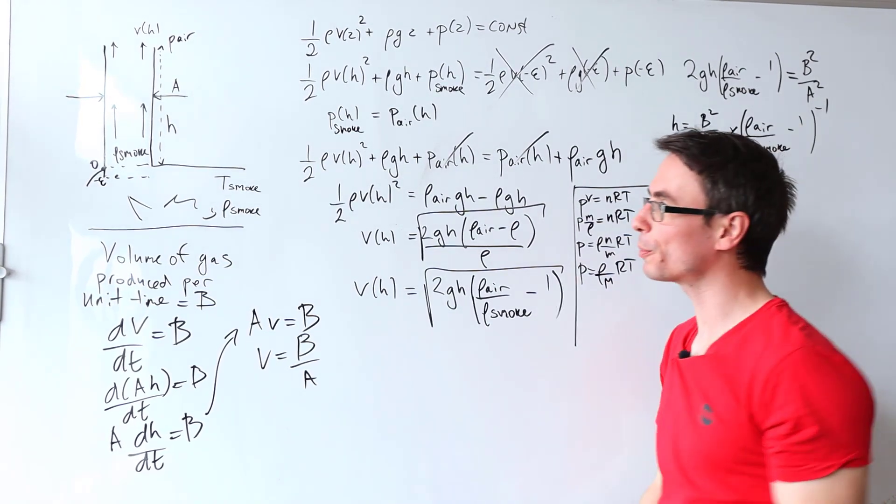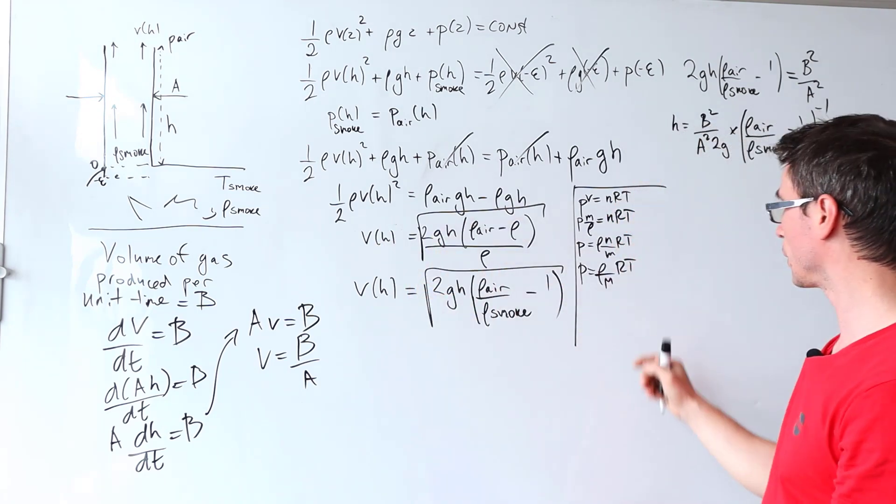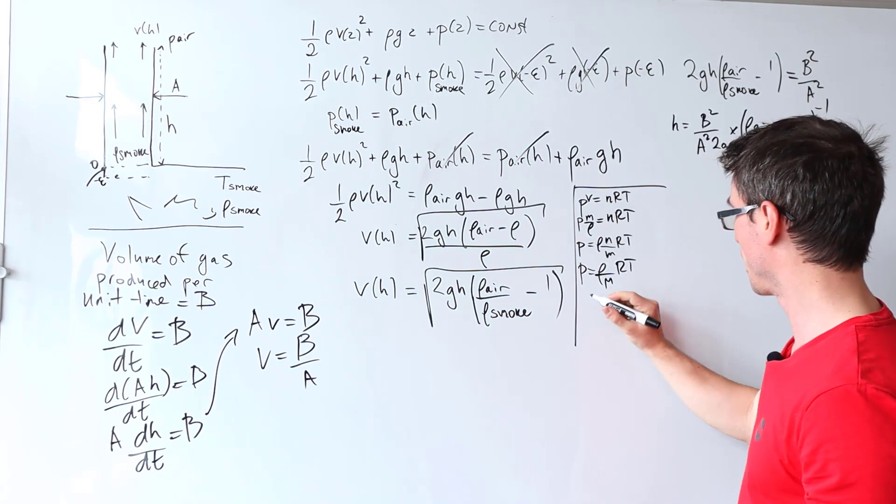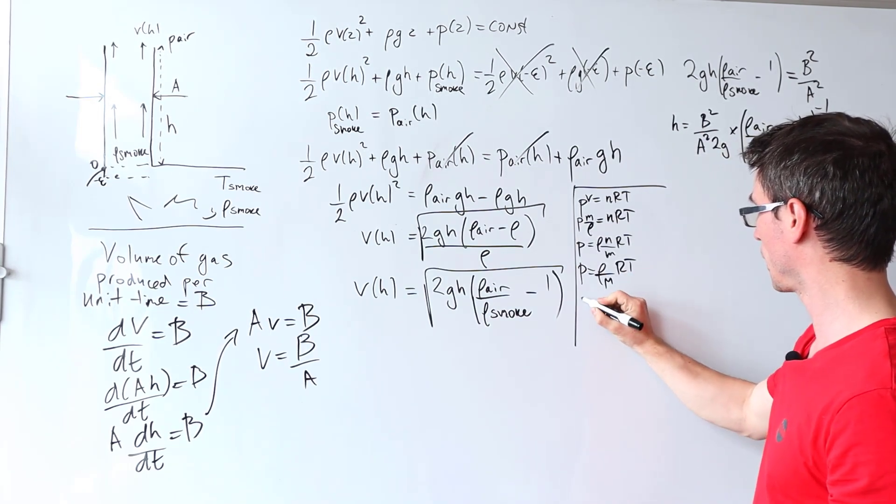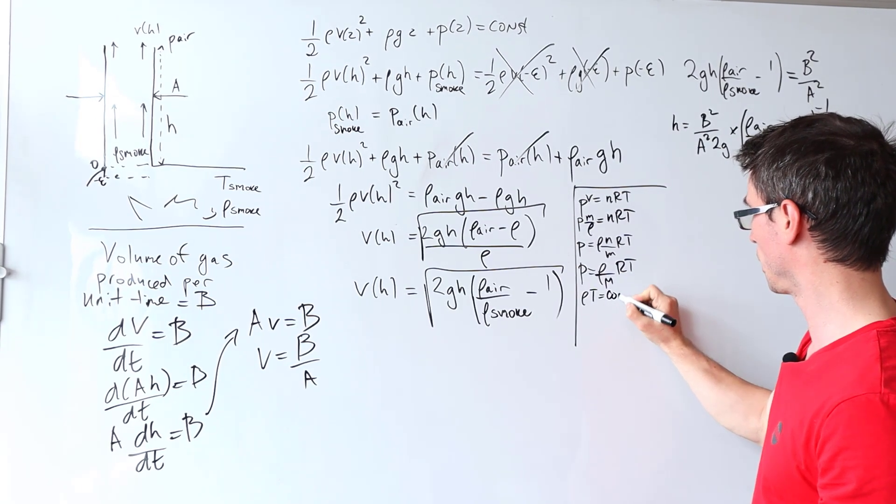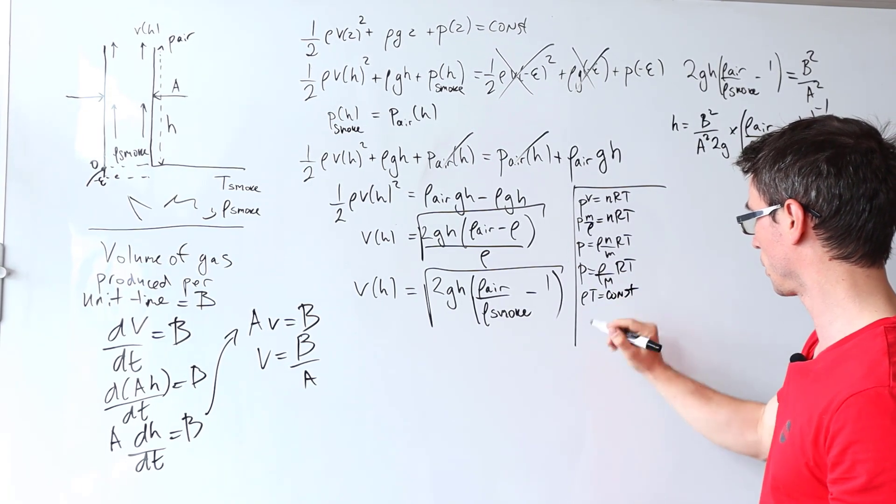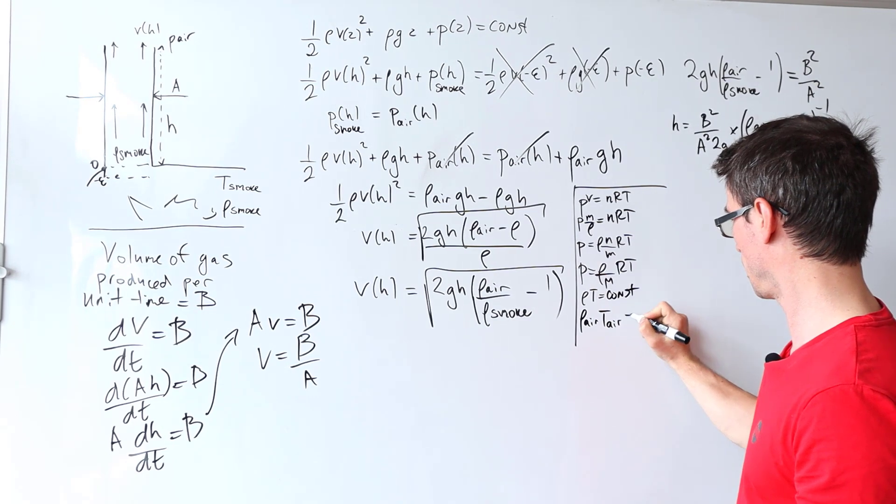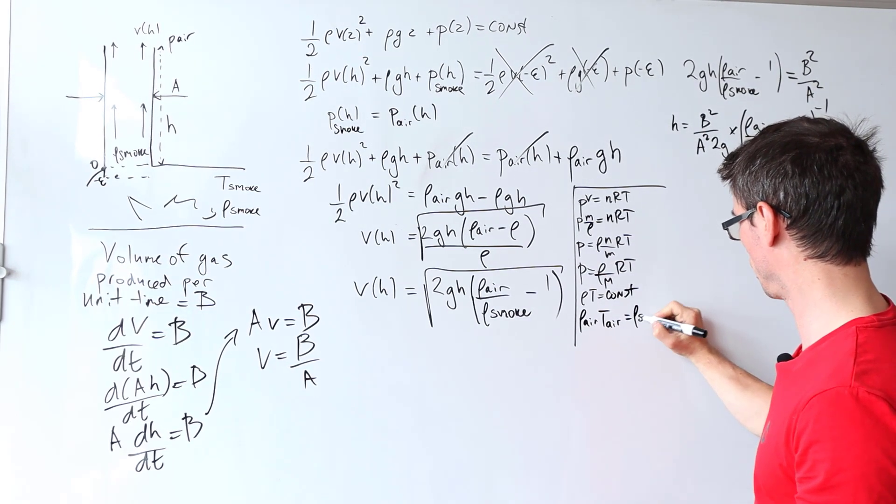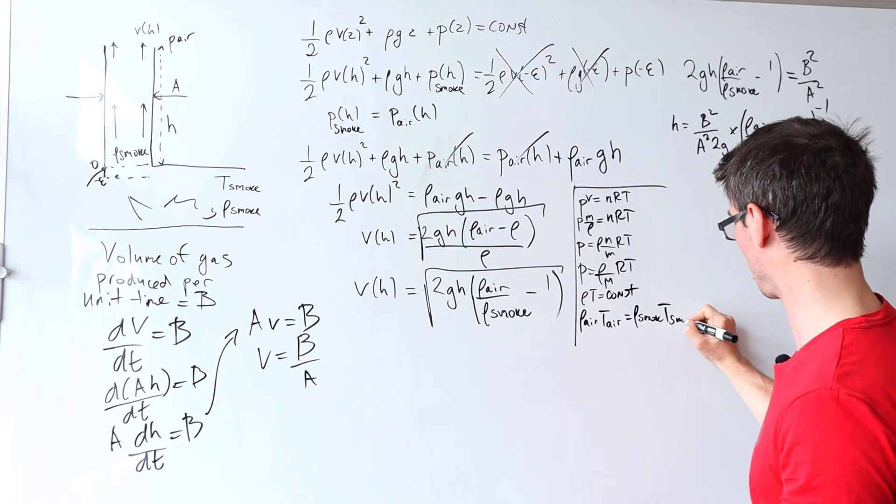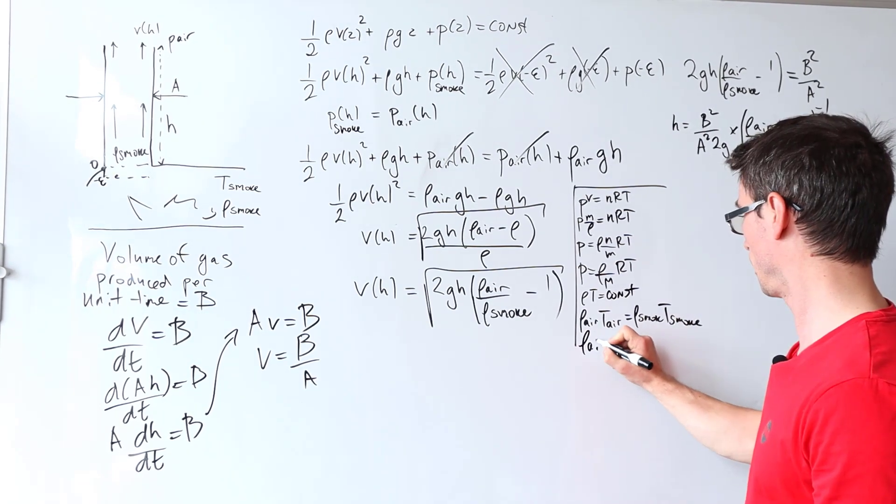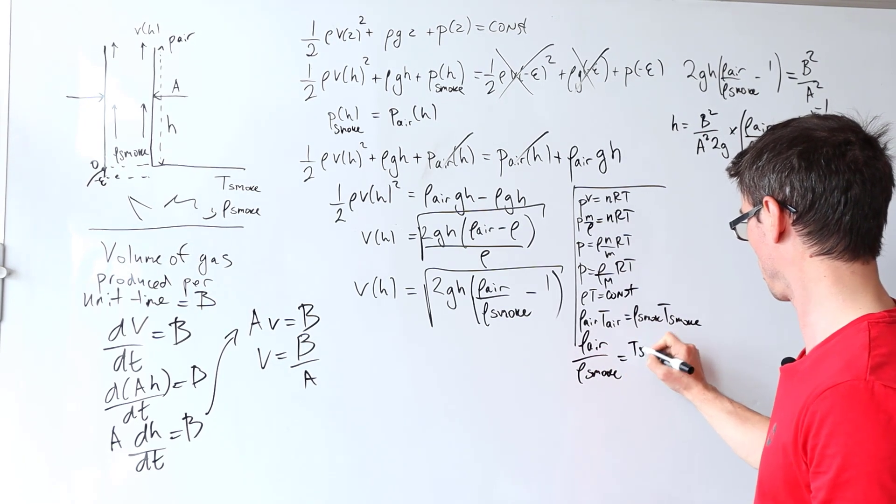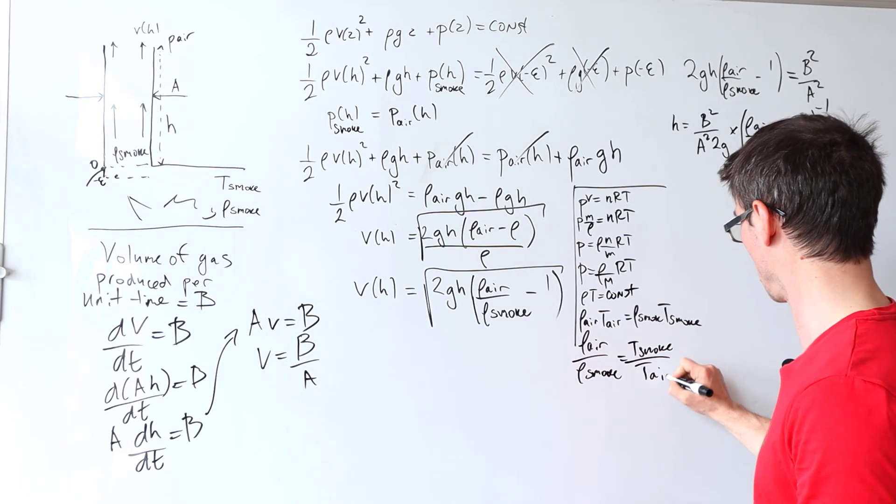Now here is an assumption: we're going to assume that the pressure is a constant, we know that R is a constant, we know that the molar mass is a constant. Therefore we can say that rho times T is equal to a constant. That would mean that rho air times T air is equal to rho smoke times T smoke. This of course would mean that rho air over rho smoke is equal to T smoke over T air.